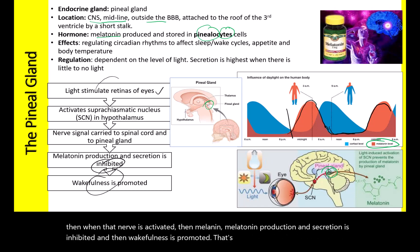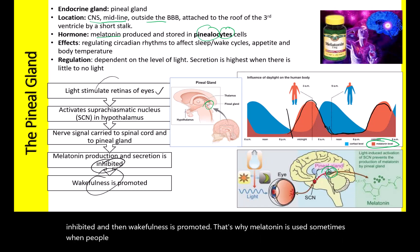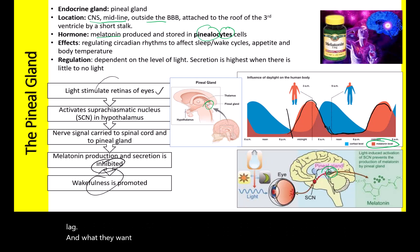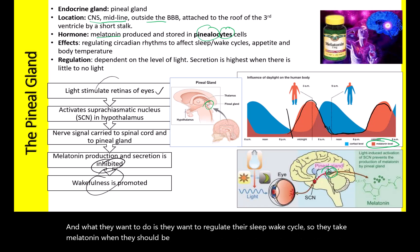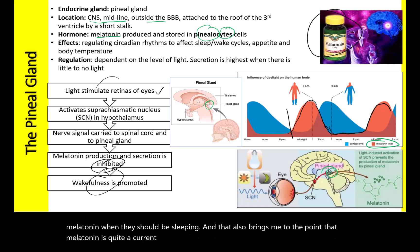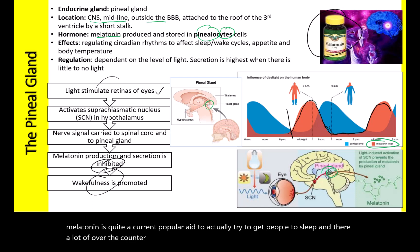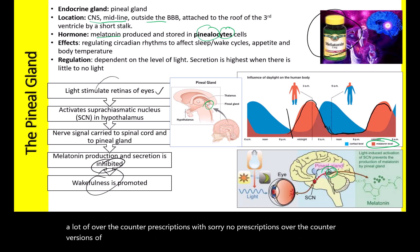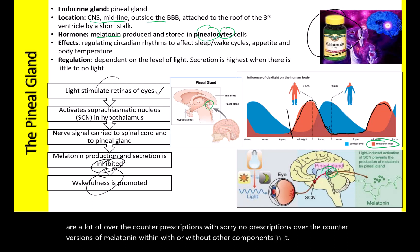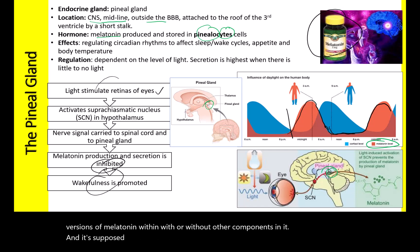That's why melatonin is used sometimes when people go on long journeys to the other side of the earth and they suffer from jet lag — they take melatonin when they should be sleeping to regulate their sleep-wake cycle. Melatonin is also a popular over-the-counter sleep aid, with or without other components, that's supposed to help you sleep when you take it.